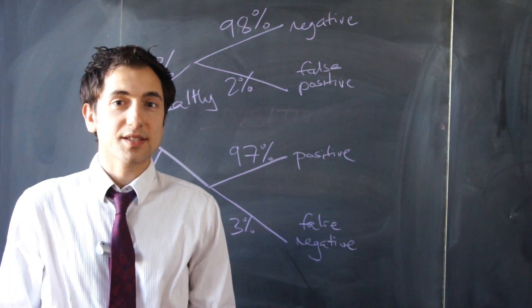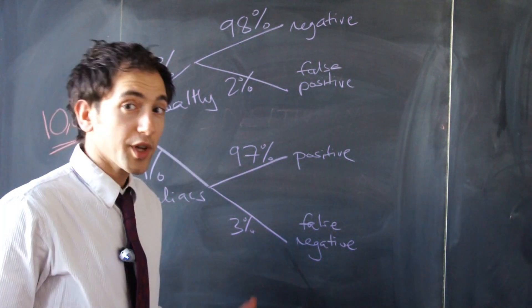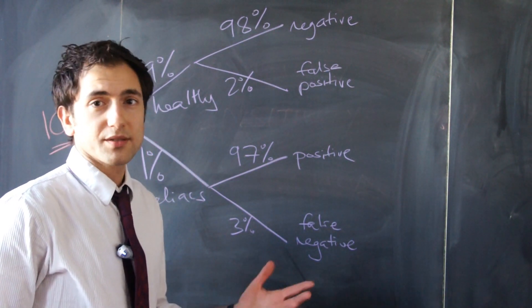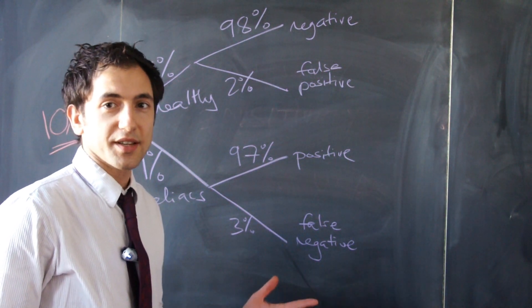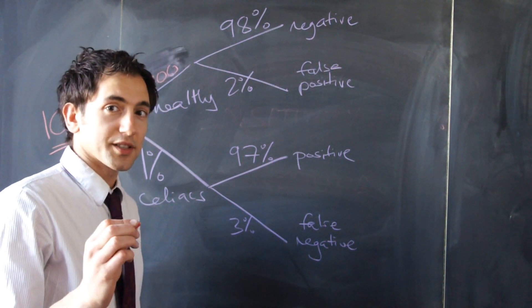Let's now suppose we test 10,000 randomly selected people from the American population. 99% of those people we would predict would be healthy. 99% of 10,000 is 9,900. The remaining 100 would have celiac disease.